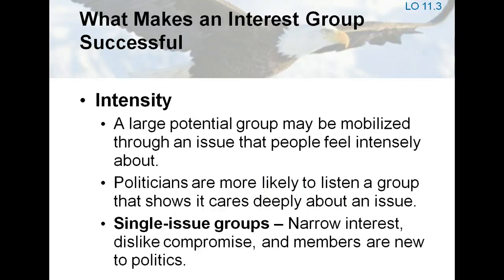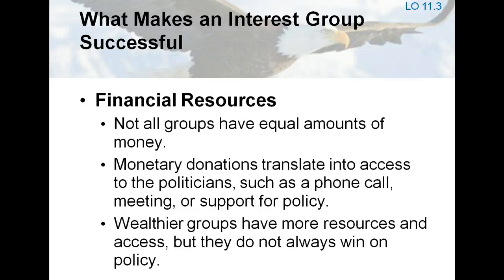One way a large potential group may be mobilized is through an issue about which people feel intensely, such as abortion. Both small and large groups enjoy a psychological advantage when intensity is involved. Politicians are more likely to listen when a group shows that it cares deeply about an issue, and many votes may be won or lost on a single issue. One of the biggest indictments of the interest group system is that it is biased towards the wealthy. Critics charge that PACs — political action committees — as the source of so much money in today's expensive high-tech campaigns, distort the governmental process in favor of those who can raise the most money. Conversely, the big interests do not always win, even on some of the most important issues, such as the Tax Reform Act of 1986.